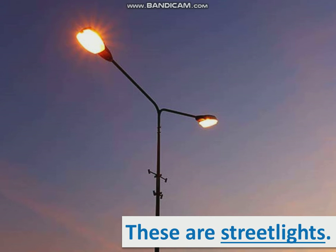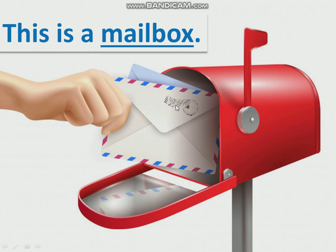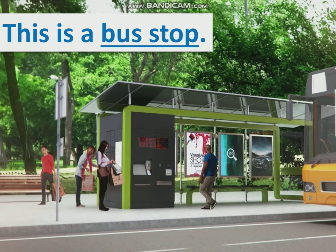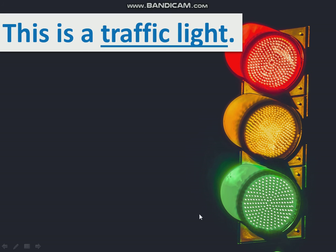These are streetlights. Look at the streetlights — in English, these are streetlights. This is a mailbox. Look at this mailbox. This is a bus stop — it's for buses. And this is a traffic light. Look at the traffic light. A traffic light has three colors. What are the colors of a traffic light? Green, yellow, and red. Very good, my friends.